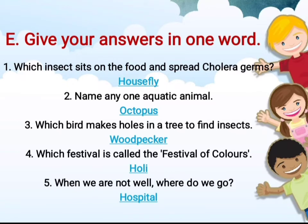Fourth question: which festival is called the festival of colors? Holi is known as the festival of colors, so you have to write Holi. The next one: when we are not well, where do we go? Children, when you are not well — that means when you are sick or badly hurt — you go to a hospital. So in the fifth blank you have to write hospital. The spelling is H-O-S-P-I-T-A-L.